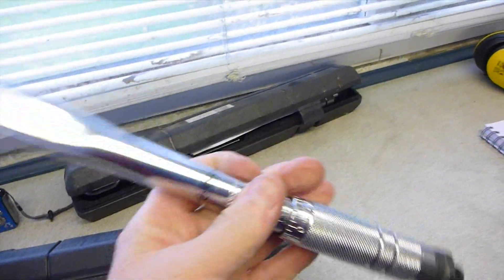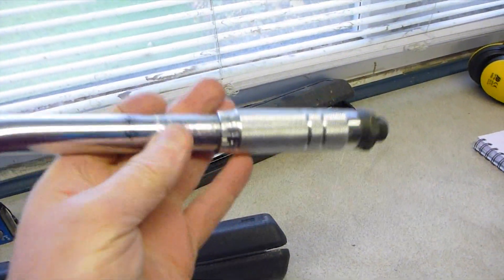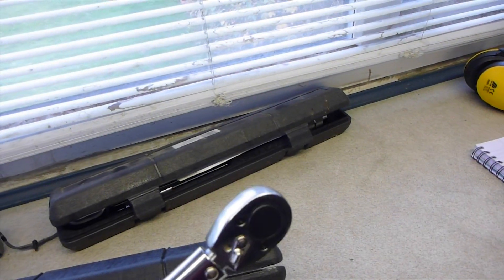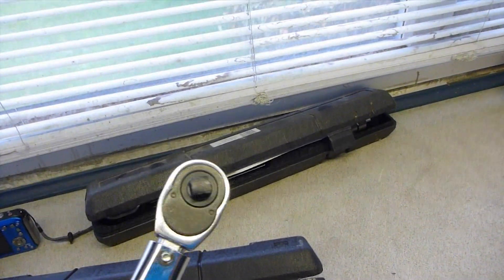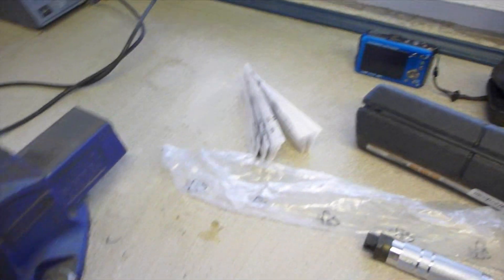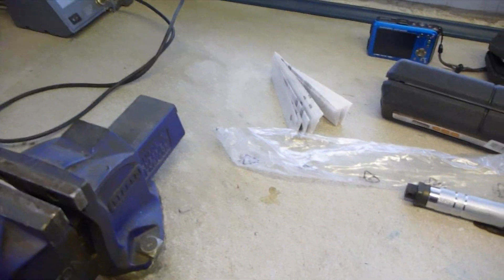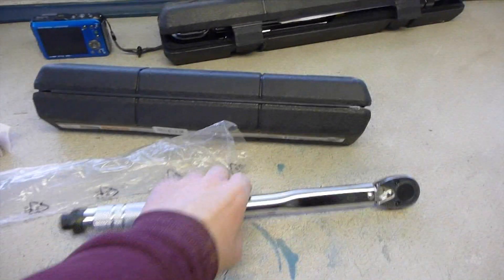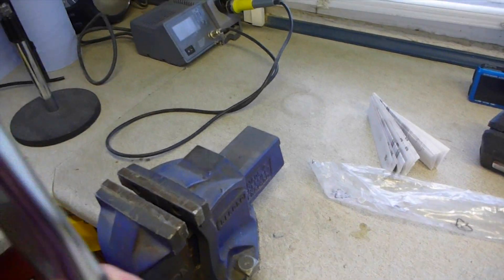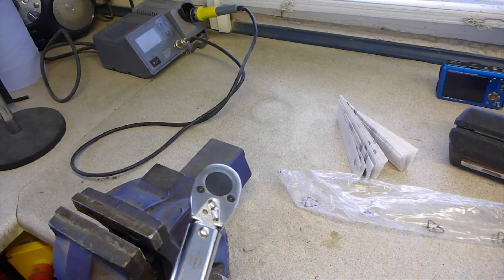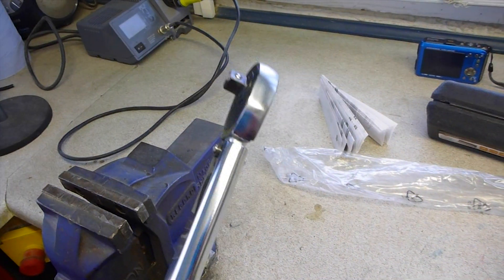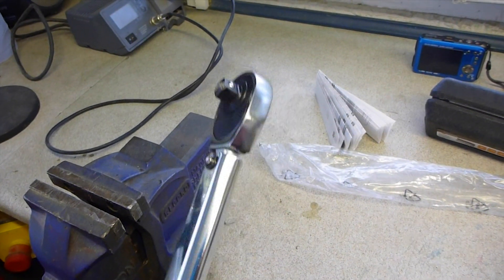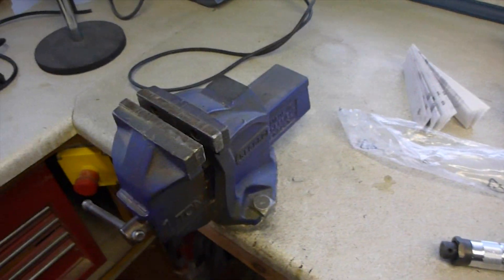The thing with this is it doesn't need to be accurate, it just needs to be repeatable. As long as I can set the Belleville springs and power drawbar up in the vice, and torque it to the same settings as I get on the mill, then I know I have sufficient tension on the Belleville springs and the drawbar to stop the tool from getting pulled out.